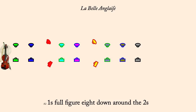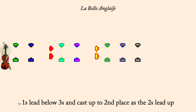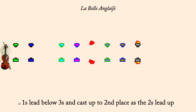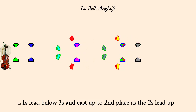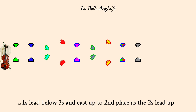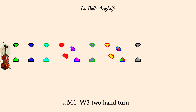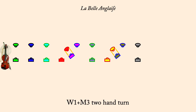Ones lead below threes and cast to second place. Man one, woman three, two-hand turn. Woman one and man three, two-hand turn.